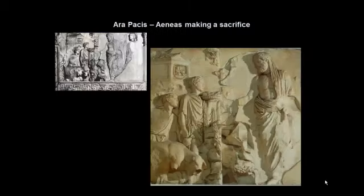Another frieze shows Aeneas—remember, allegedly Augustus' ancestor—making a sacrifice to the gods. Virgil, the poet who wrote the Aeneid, actually worked for Augustus and was on his payroll. This famous epic poem was frankly another great propaganda work. In fact, many of the great works in Latin were produced during Augustus' reign, paid for from the government budget, and were consciously ordered to reinforce the rule of Augustus.